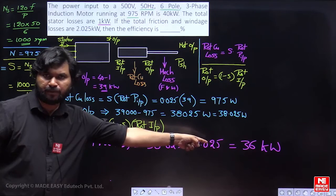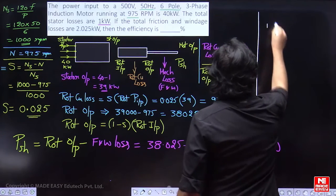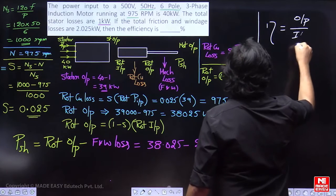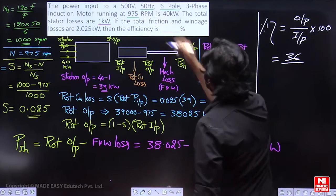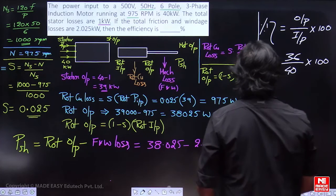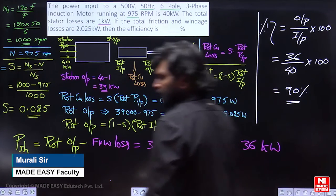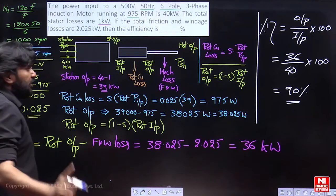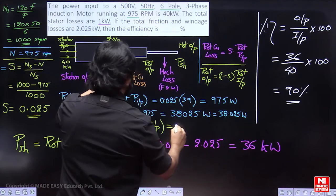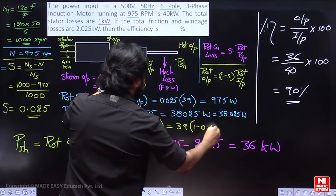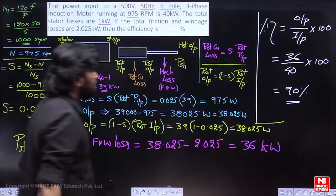So, what you are asked is efficiency? Efficiency is percentage means into 100 that is 36 by 40. So, calculation of rotor output you can follow this method also, directly you can make rotor input is 39 into 1 minus 0.025 that is equal to 38.025 watts.